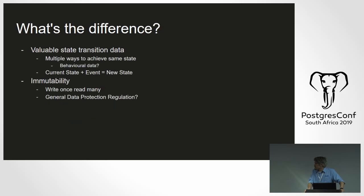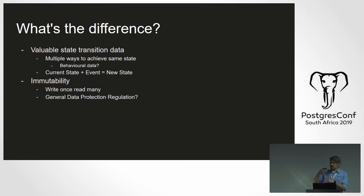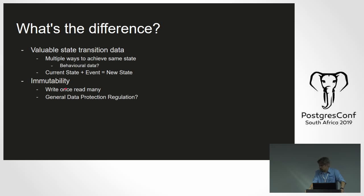With event sourcing, the main focus is in the transition of state — the data comes afterwards and can be hydrated from the events by playing them back. The aggregate is constantly evolving. There are multiple ways to achieve the same state, and the question is what data are you losing in those different paths people take. Current state plus event equals new state — something for the machine learning people.